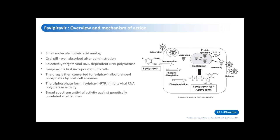Favipiravir is a small molecule nucleic acid analog. It's an oral pill and it's very well absorbed after administration. The drug specifically targets viral RNA-dependent RNA polymerase. After ingestion and absorption, favipiravir is first incorporated into the host cells, then converted to favipiravir ribofuranosyl phosphates by the host cell enzymes.